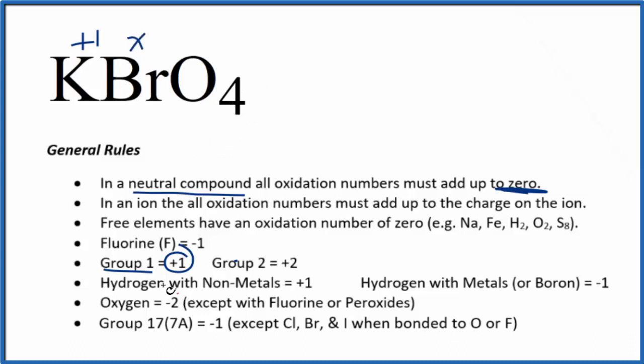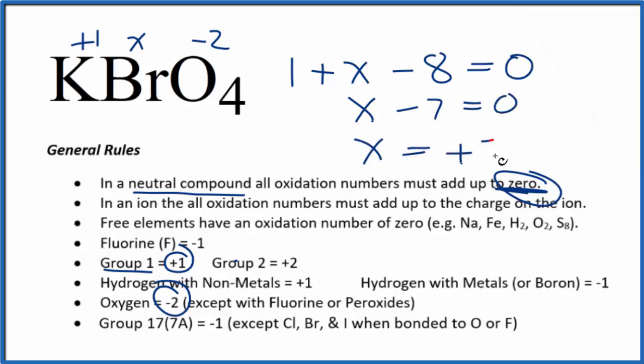Oxygen, that's almost always minus 2. So we know this all equals 0. We can just set an equation up. 1 plus x, then we have minus 2 times 4, minus 8, that equals 0. x minus 7 equals 0, so x needs to equal a plus 7.